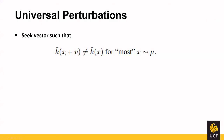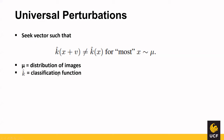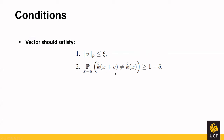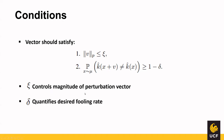We want to seek a vector v such that when added to a data point x, it misclassifies the data point for most x in the distribution, where mu is the distribution of images, k is the classification function, and v is our perturbation vector. This vector should satisfy two constraints: the p-norm of the vector should be less than or equal to the expected magnitude epsilon, and the empirical fooling rate should be greater than or equal to the target threshold delta, where epsilon controls the magnitude and delta quantifies the desired fooling rate.